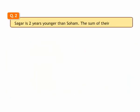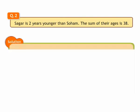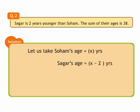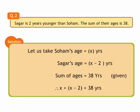2. Sagar is 2 years younger than Soham. The sum of their ages is 38. Let us take Soham's age as x years. Sagar is 2 years younger. Hence, we get x minus 2 years. It is given that the sum of their ages is 38. Hence, we can write x plus x minus 2 is equal to 38. Hence, we get an equation as x plus x minus 2 is equal to 38.